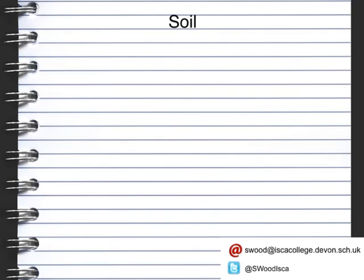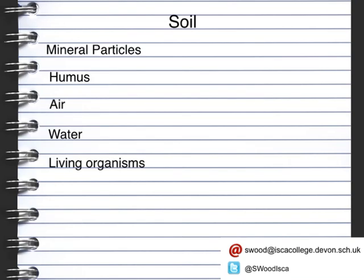Soil is a mixture of various different things. It contains mineral particles, humus which is dead and decaying plants and animal material, and also air or pockets of air alongside water and living organisms. Now if a soil is fertile it will have lots of air spaces in order to provide oxygen for the living organisms, as they need that oxygen to be able to respire.